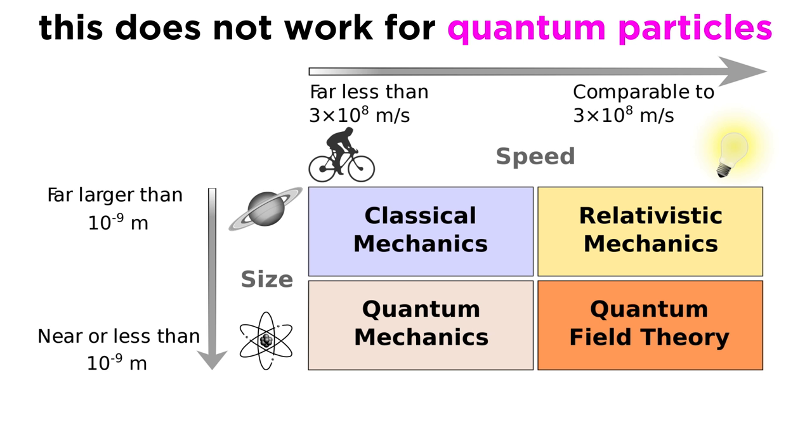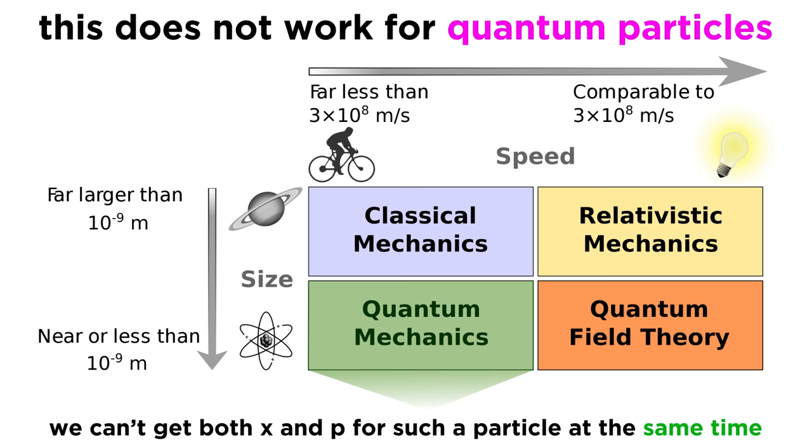However, as we touched upon in previous tutorials, quantum particles, or the teeny tiny particles that are smaller than an atom, operate under a different set of rules. We don't have quantum cameras, or any other such measuring device that can examine a quantum particle, such as an electron, and give us a number for both x and p simultaneously. Instead,